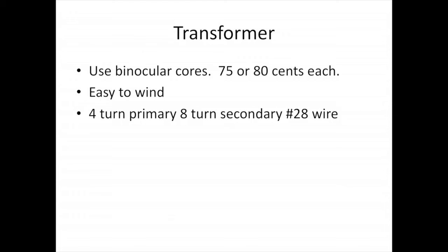For the transformer I recommend binocular cores. They cost like 75 or 80 cents each, could be as much as a dollar by the time you pay postage. They are very easy to wind. I use a 4 turn primary and an 8 turn secondary of number 28 wire. You can also use a 2 turn primary and a 4 turn secondary.